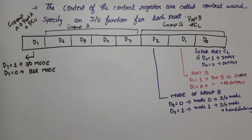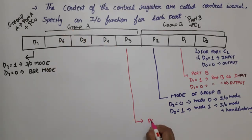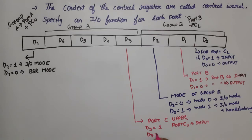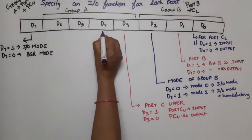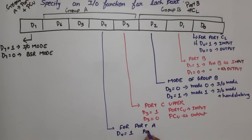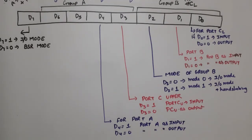D3 is for Group A, specifically for Port C upper. If D3 is equal to 1, Port C upper works as input. If D3 is equal to 0, Port C upper works as output. D4 is for Port A. If D4 is equal to 1, Port A works as an input port. If D4 is equal to 0, Port A works as an output port.